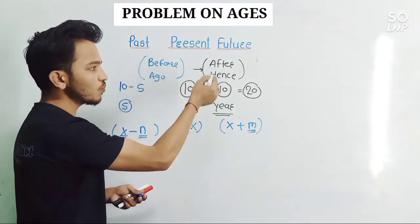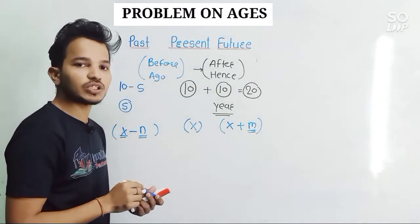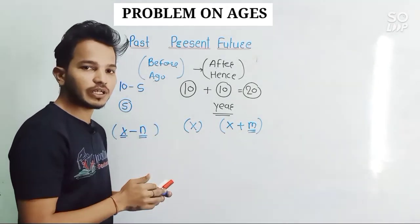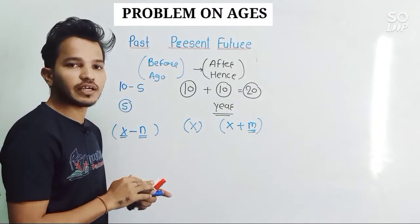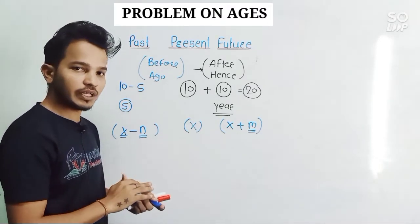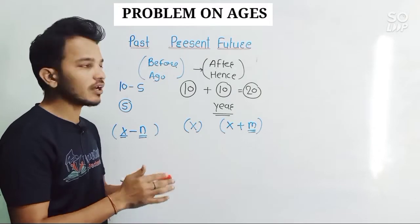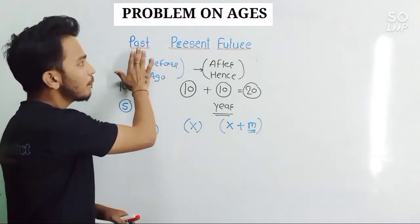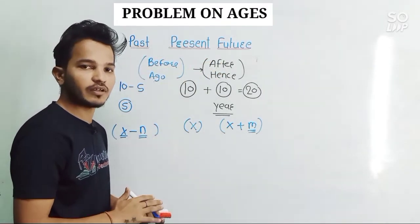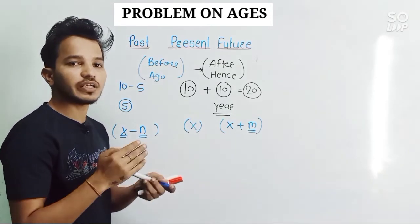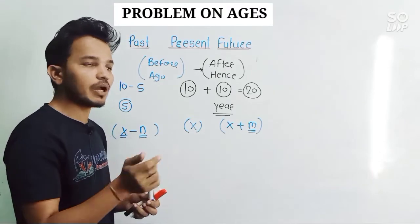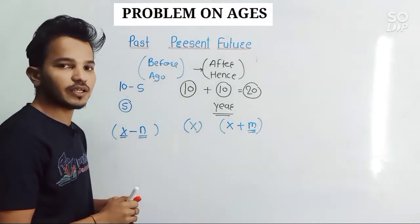So the words before, ago, and after will be used in every age question. We just need to identify whether we are calculating future age, past age, or present age. As mentioned at the start, all questions are dependent on past, present, and future age. Let's see how we can solve each type of question one by one. Here is our first question.